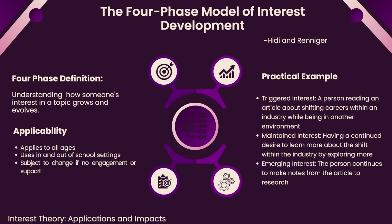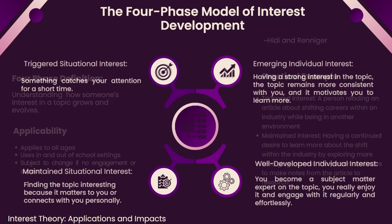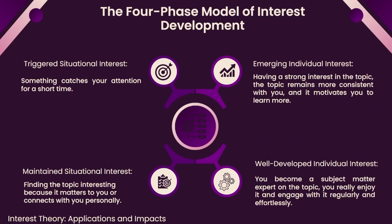An example is a person developing an interest in a topic while being placed in another environment for something else. While in that environment, interest starts to maintain and grow to the point where the person researches more on that topic. They may later become a subject matter expert based on the topic of interest, which started earlier as an idea planted within them to dive deeper into the subject. The model is broken into four phases: triggered situational interest, sparked by a stimulus and only momentarily catching the individual's attention; maintained situational interest, sustained over time due to the subject's relevance or personal connections; emerging individual interest, which starts to become more personal and consistent as the individual engages more deeply; and well-developed individual interest, where the person is deeply ingrained in the topic, consistently engaged with less effort needed to understand it.